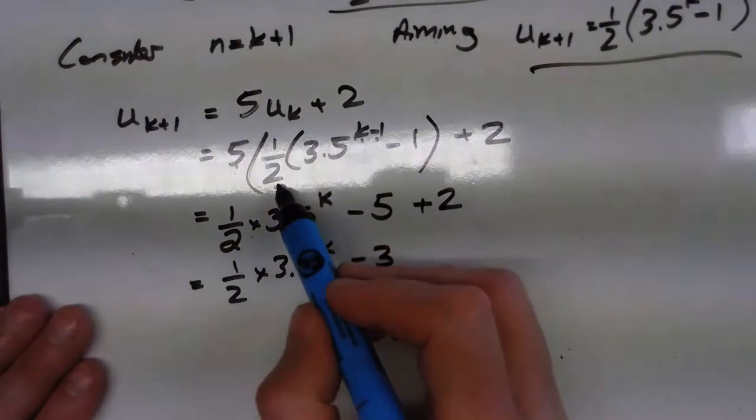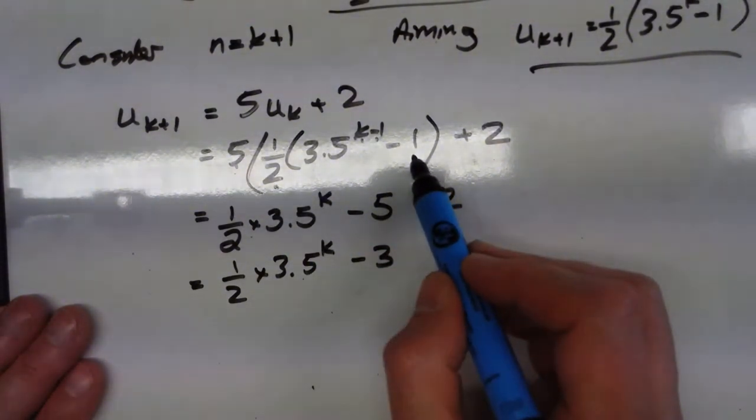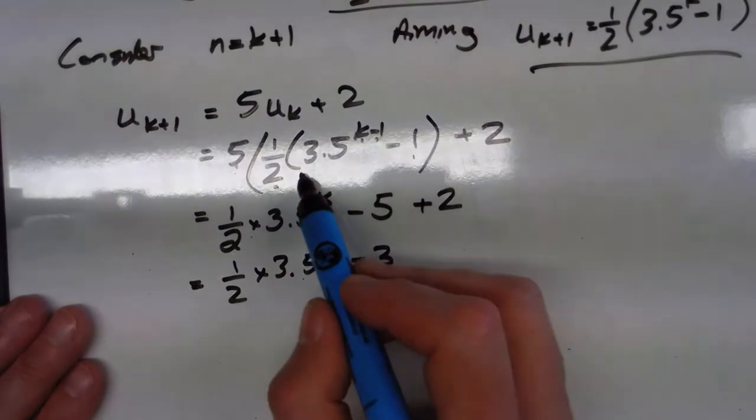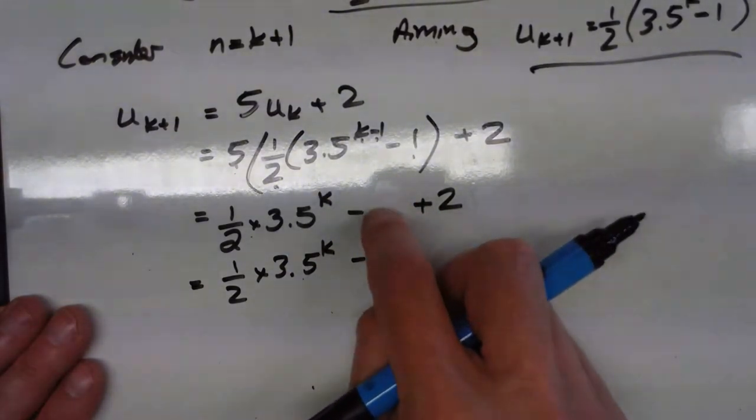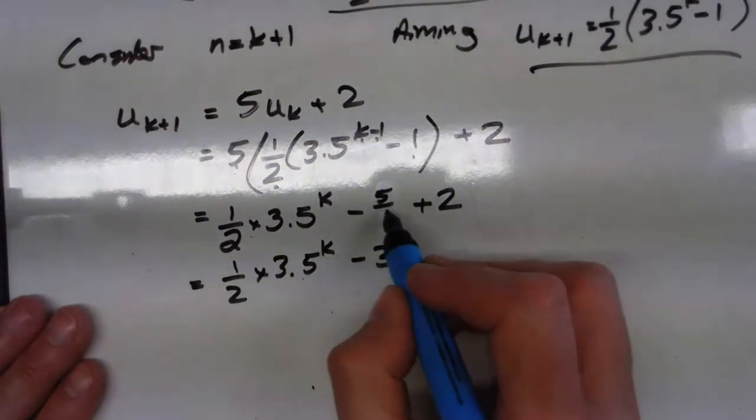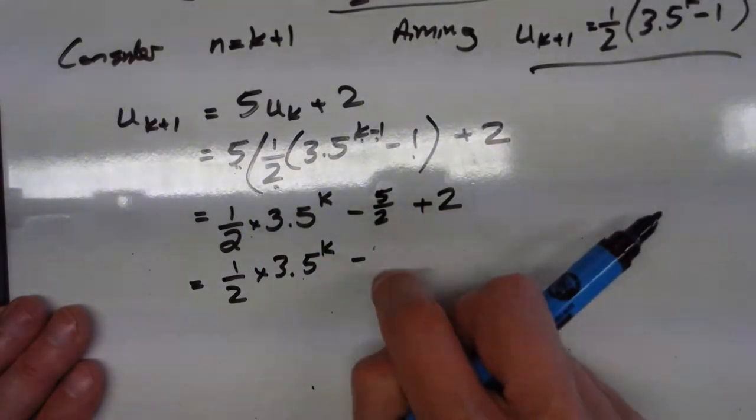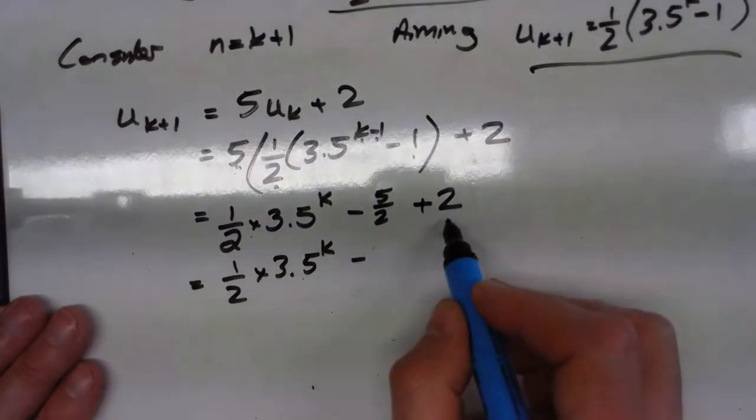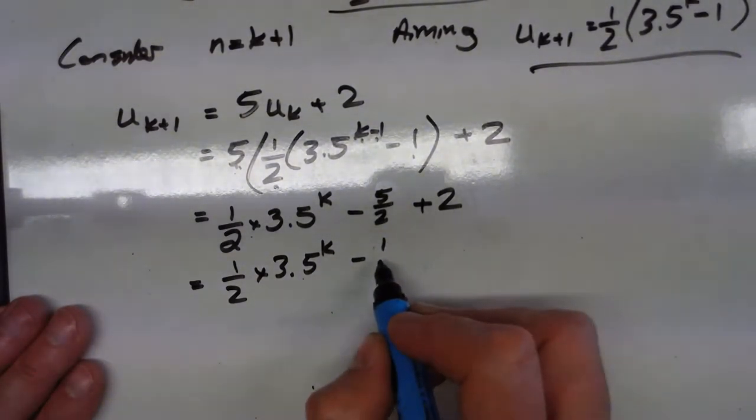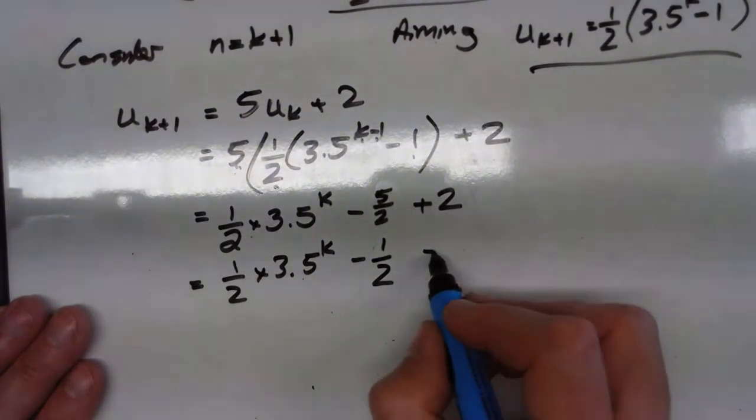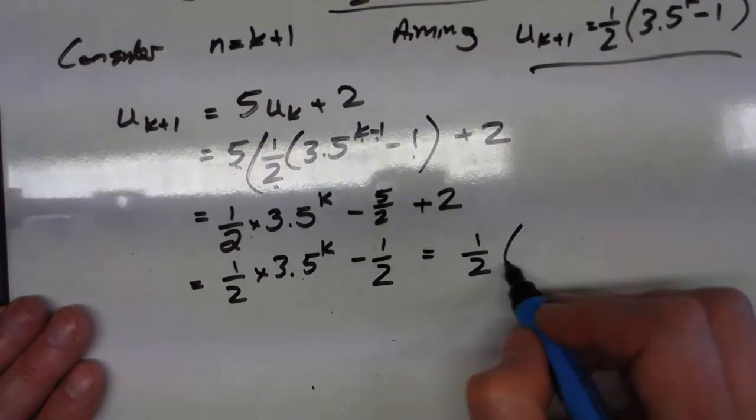Oh, I've spotted it here. That half there was supposed to be a half there as well, wasn't it? That was a bracket there. Yeah, so this should have been minus 5 over 2 here. Yeah, so 5 times a half times minus 1. So now that, actually, there's the minus 5 over 2, add 2. So now I've got minus a half there, and now I can take out the factor of a half.